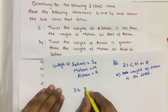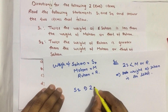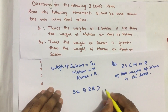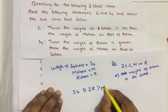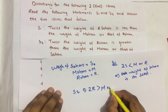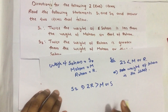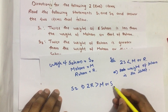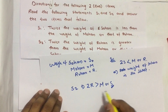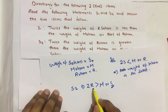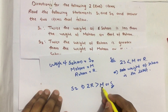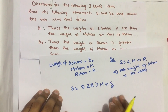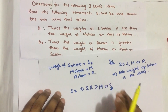Now Statement 2: twice the weight of Rohan is greater than the weight of Mohan or the weight of Sohan. We already know the weight of Sohan is the least, so we have to see whether the weight of Rohan is more than the weight of Mohan or vice versa.